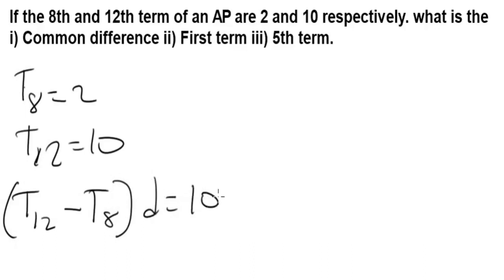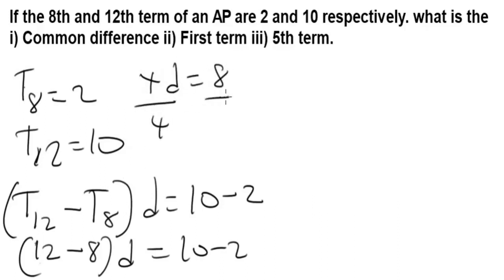This equals 10 minus 2. This means that the twelfth term minus the eighth term times common difference equals 10 minus 2. If you simplify, we're going to have 12 minus 8 will give us 4 times the common difference, which equals 8. Therefore d equals 8 divided by 4, so our common difference will be 2.